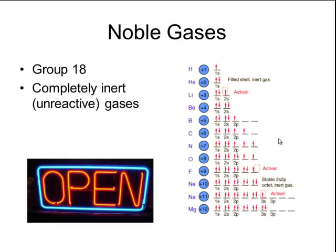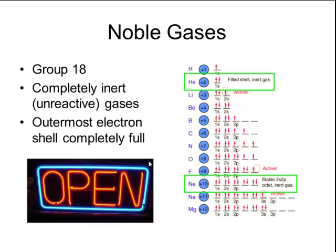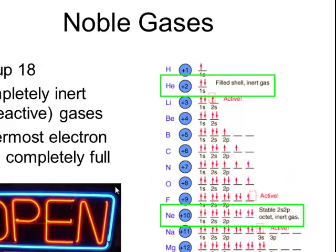The last group of the p block are the noble gases, found in group 18. They are all similar in that they are completely inert or unreactive. They include elements like helium, neon, argon, and krypton. Because they are unreactive, they are often found in lights.